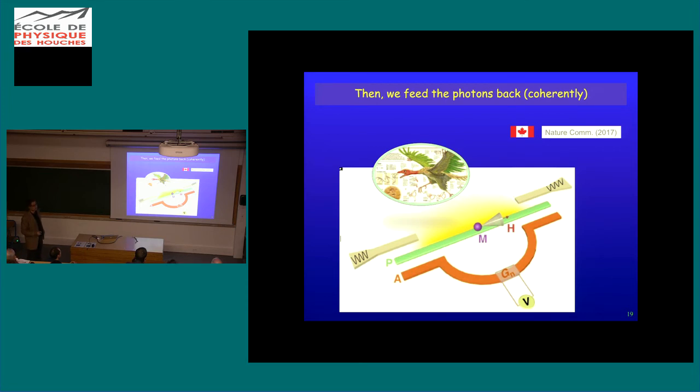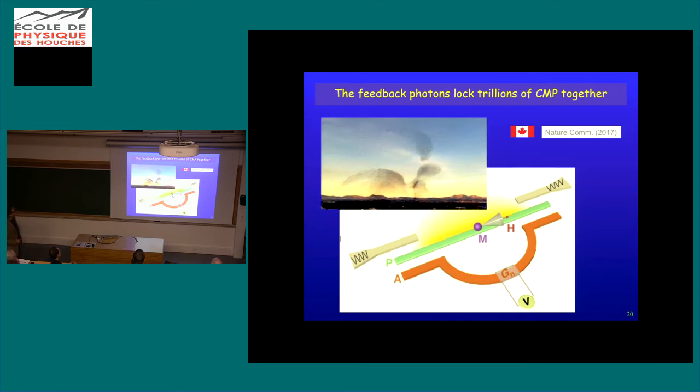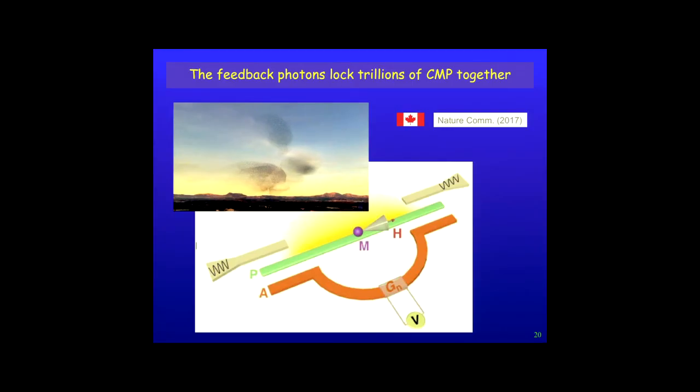And in a microwave case, you can have many ways, coherently enhance this enlarge, amplify this current. So we amplify, essentially, this current, getting more coherent photons, and we feed them back to couple with this beast here. And when we're doing that, essentially, we can use the feedback photon to lock trillions of cavity magnum polariton, let them have collective dynamics. And they look very interesting, as I'm going to show you.